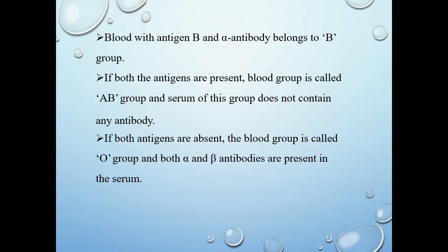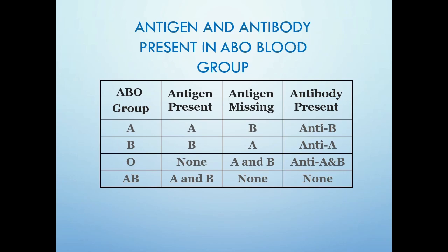Another important antigen is the Rh factor, also known as antigen D, which is either present or absent. In normal conditions there is no naturally occurring antibody for this Rh antigen. Rh positive is most commonly represented in combinations of A, B, AB, and O, especially in the Indian population. Looking at the chart: blood group A has antigen A, missing antigen B, with anti-B antibody; blood group B has antigen B, missing antigen A, with anti-A antibody; O has no antigen but both anti-A and anti-B; AB has both antigens and no antibody.